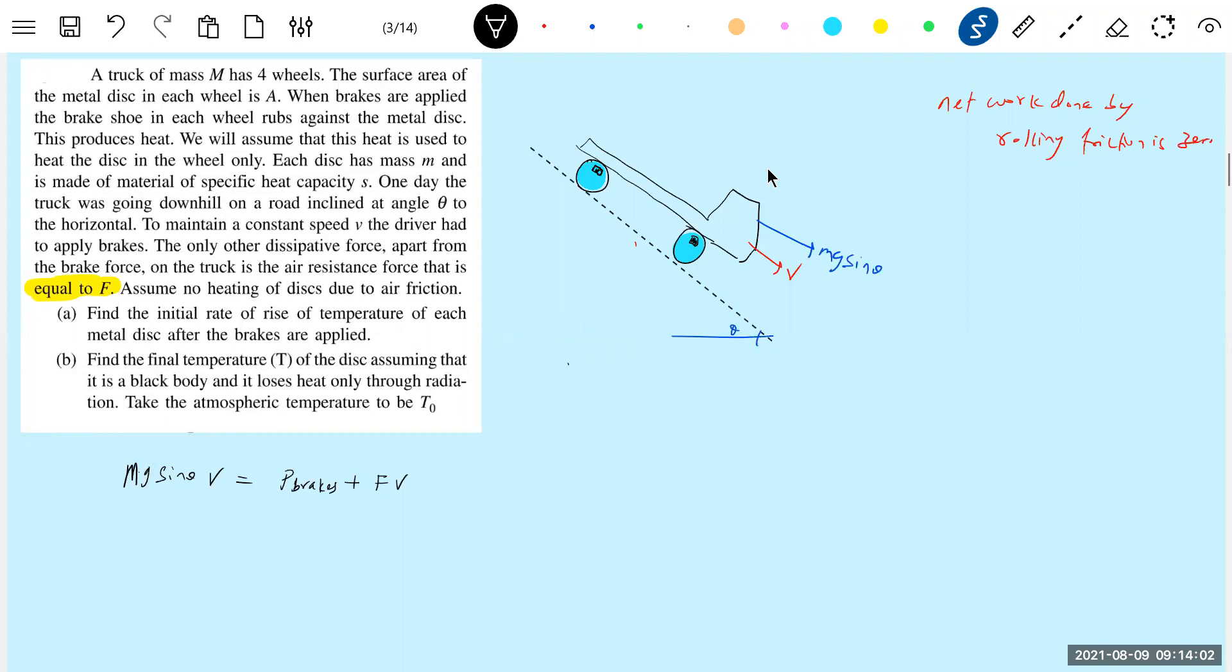The total, along with everything, total mass of the truck should be the M, and the mass of the truck will be definitely greater than mass of the wheels. There's no doubt. Okay, this like, we will proceed here. mg sin theta into V equal to power dissipated by the brakes plus power dissipated by the air resistance. Now, now.